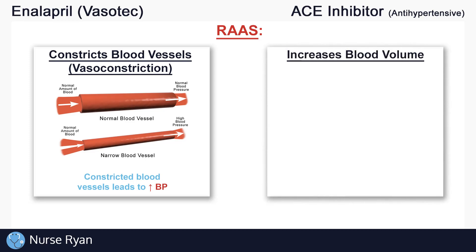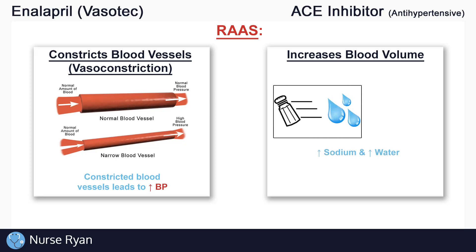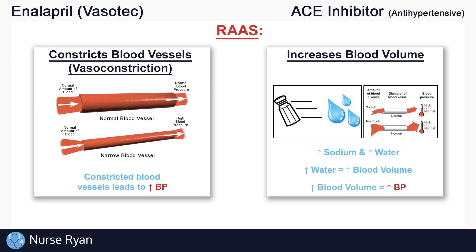The RAA system also increases blood volume, which is the amount of fluid circulating through your blood vessels. Specifically, it increases the amount of sodium and water retention in the blood. This means that your body holds on to more sodium and more water so that you don't lose as much fluid in your urine. And if you increase the amount of fluid in the blood vessels, that increases your blood volume, which also increases your blood pressure.